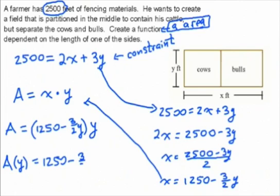I'm sorry, back up—1,250 minus three-halves y squared after distribution. Later in the book, we're going to find out how to maximize this rectangular pen to benefit the cows and bulls, given as much area as possible.